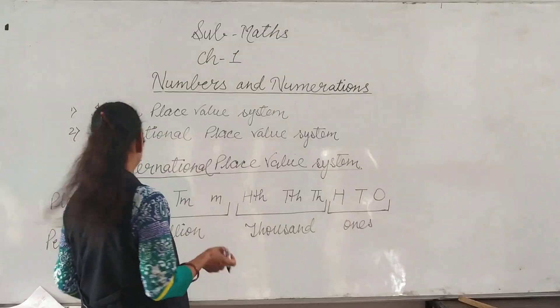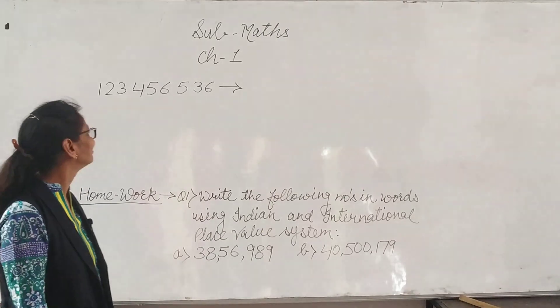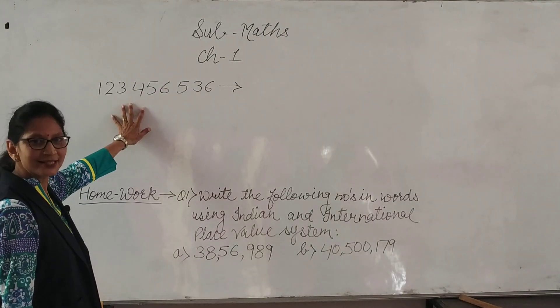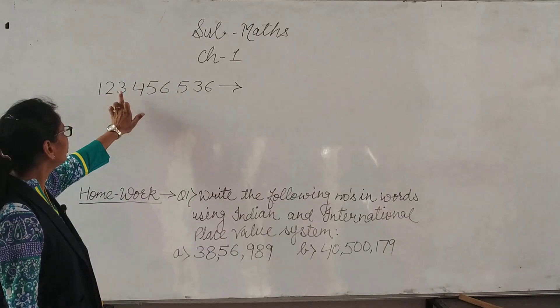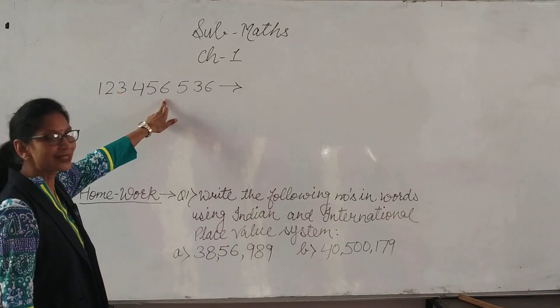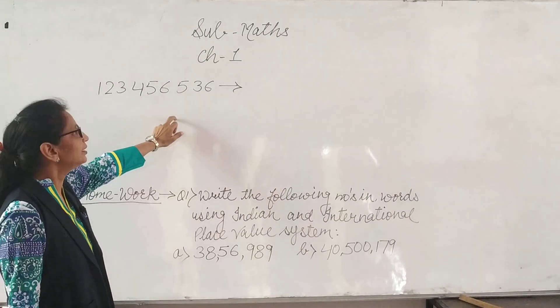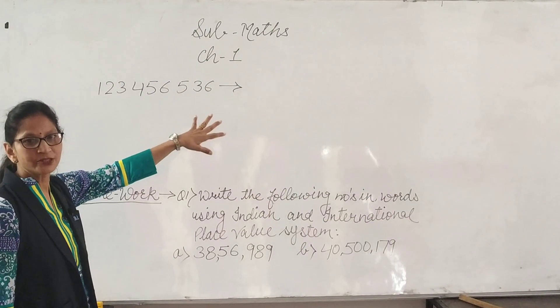Let's see the example. We have nine digit number: 1, 2, 3, 4, 5, 6, 5, 3, 6. How to read and write using International Place Value System?